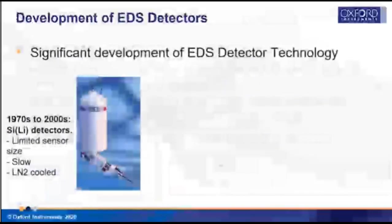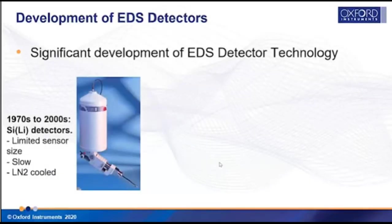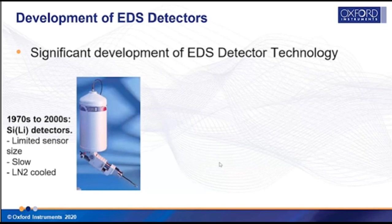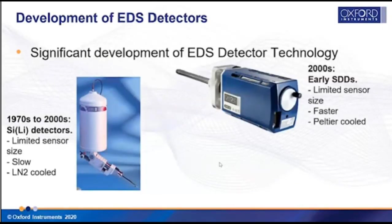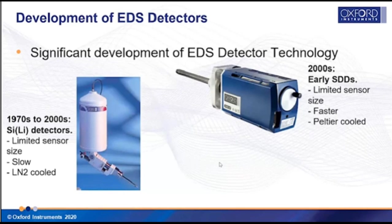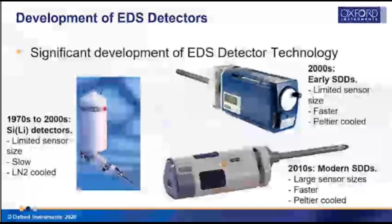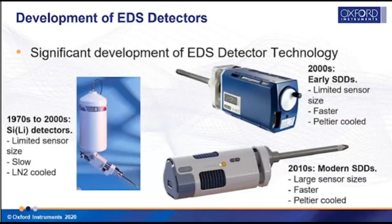EDS is a well-established technique that has been around for 50 or more years. For many decades, EDS detectors used lithium-doped silicon crystal technology — the so-called SiLi detectors — which were limited in sensor size, relatively slow, couldn't cope with large numbers of X-rays per second, and required cooling by liquid nitrogen. In the 2000s, SiLi detectors were gradually replaced by silicon drift detectors. These early SDDs were much faster, capable of X-ray count rates of hundreds of thousands of counts per second, and required only Peltier cooling.